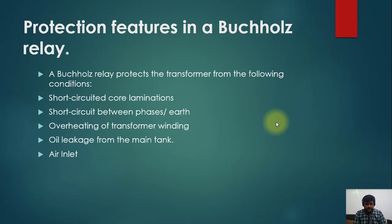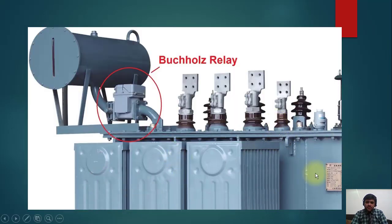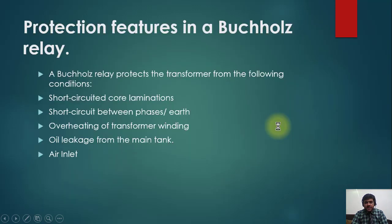The Buchholz relay operates on the following principle: whenever gases are produced inside the transformer, or air enters from an unknown external source, this air is trapped inside the Buchholz relay. Any fault in the transformer produces heat, which decomposes the oil and generates gas. This gas produces bubbles in the main tank. The bubbles rise naturally due to their low density, travel through the pipe, and get trapped in the relay — since the level of the Buchholz is slightly elevated.